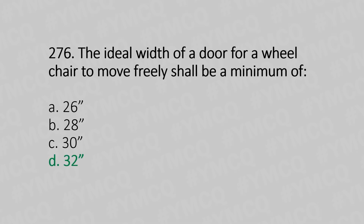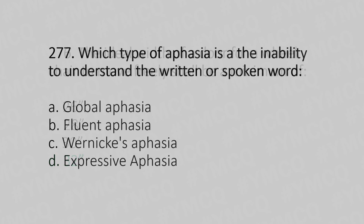Now let's move to question number 277. Which type of aphasia is the inability to understand the written or spoken word? Option A, global aphasia; Option B, fluent aphasia; Option C, Wernicke's aphasia; Option D, expressive aphasia. And the answer is Option C, Wernicke's aphasia.